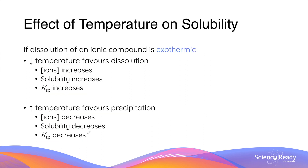If you understood the effect of temperature on an endothermic reaction, the effect will be completely the opposite for an exothermic reaction. An exothermic reaction is always favoured at a lower temperature. So when you lower the temperature, the ion concentrations and the solubility of the compound both increase, and that leads to an increase in Ksp value.